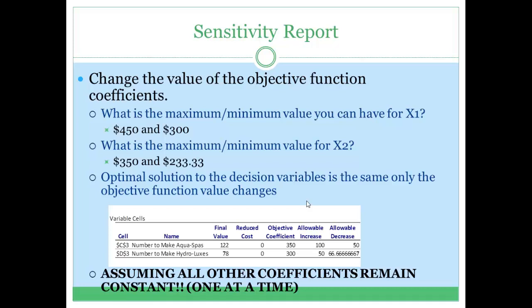In this Blue Ridge Hot Tubs problem, the coefficient here was the profit per unit of aqua spa produced, which is $350. The objective coefficient for hydroluxes was the profit per unit for hydroluxes.